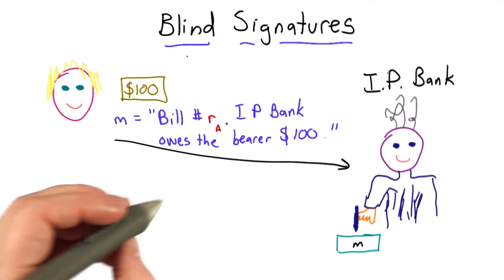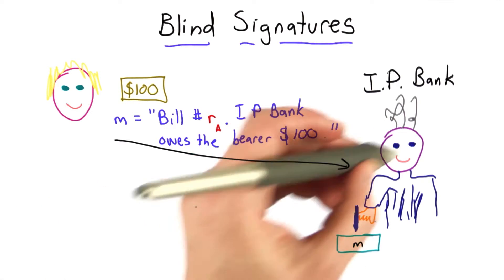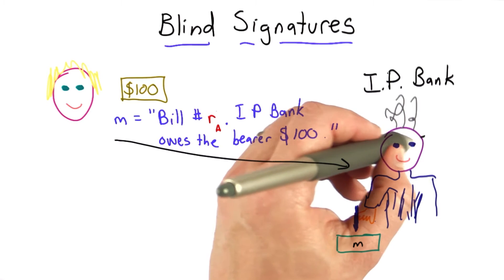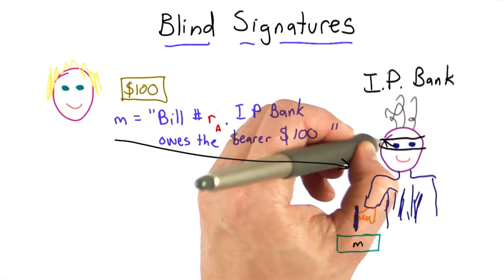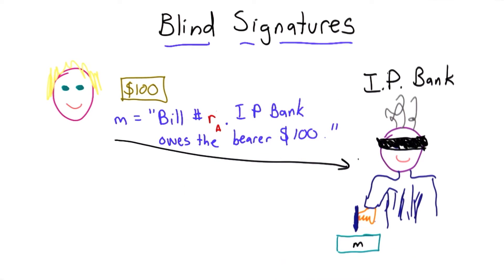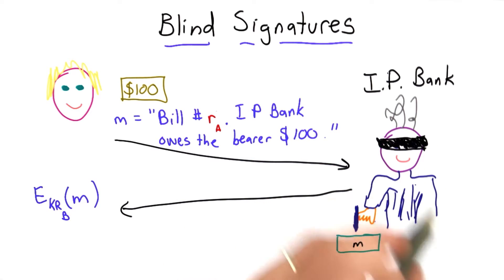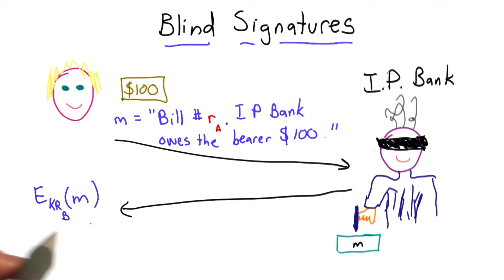To make it a blind signature, she'll insist the banker wear a blindfold before bringing out the message M, and the banker will have to sign it without being able to see the message. The bank will then give that signed message back to Alice.